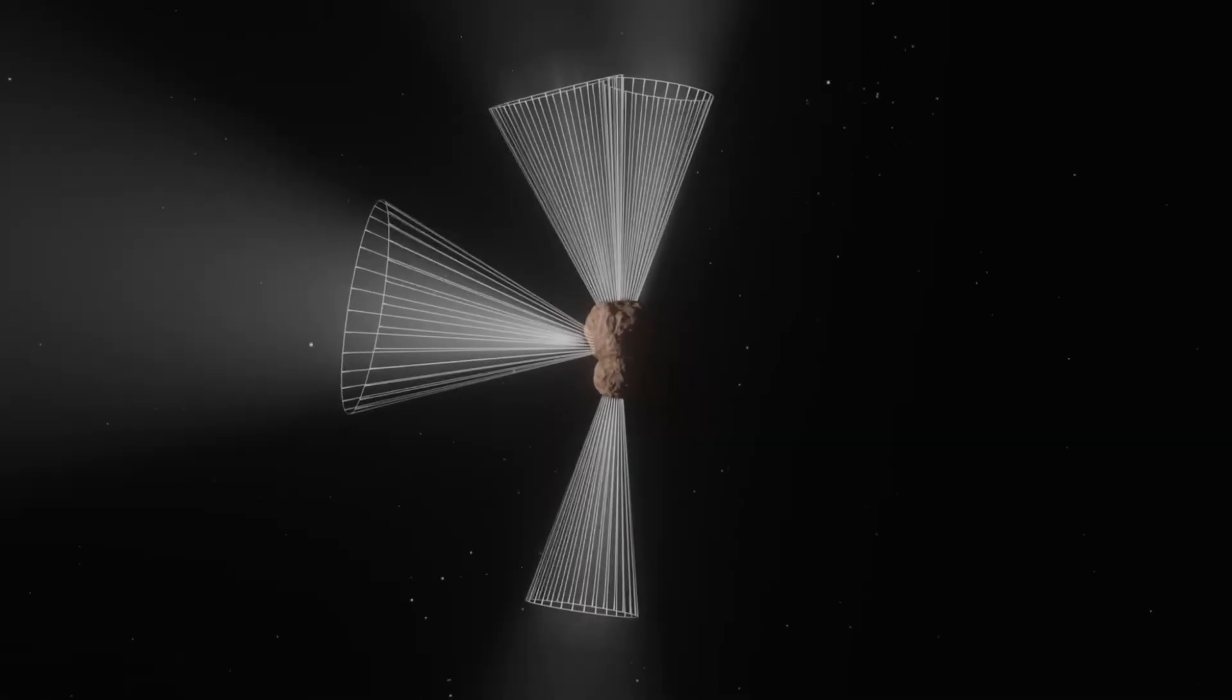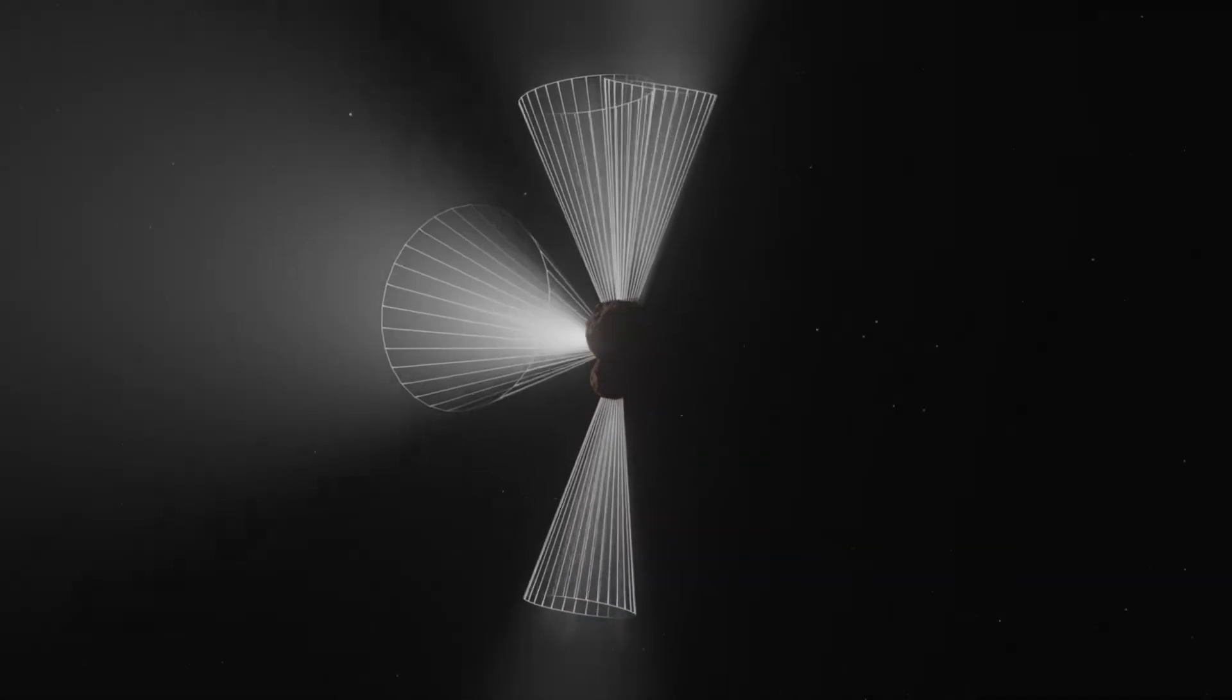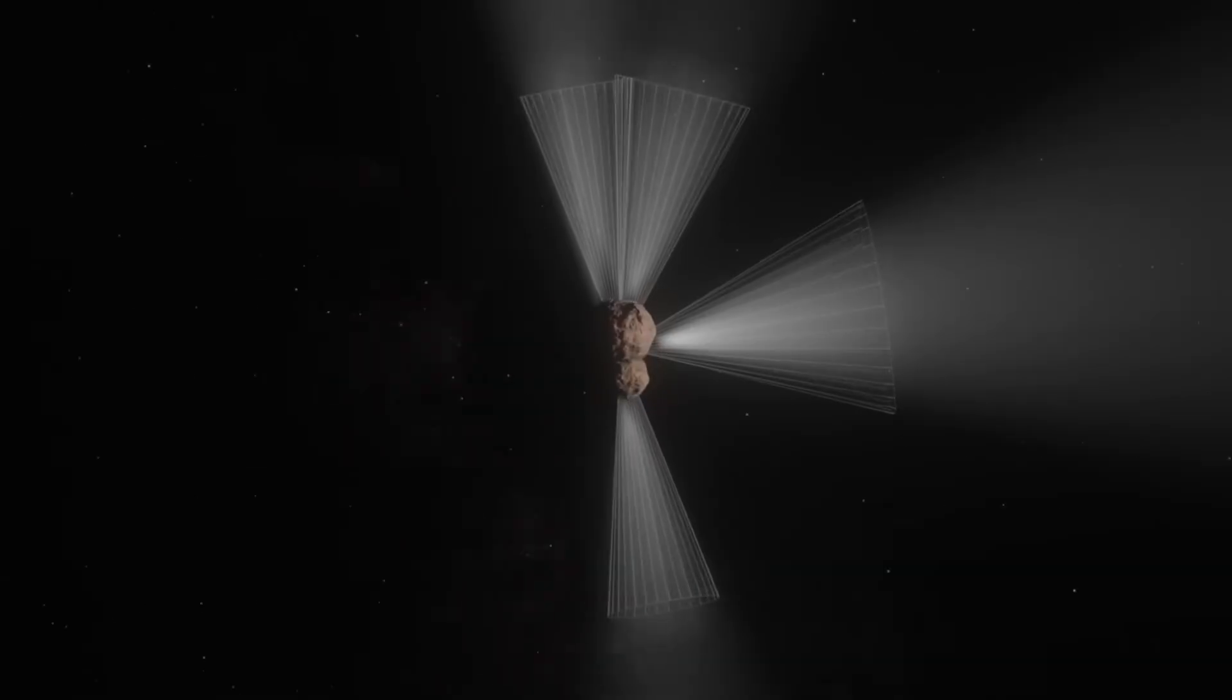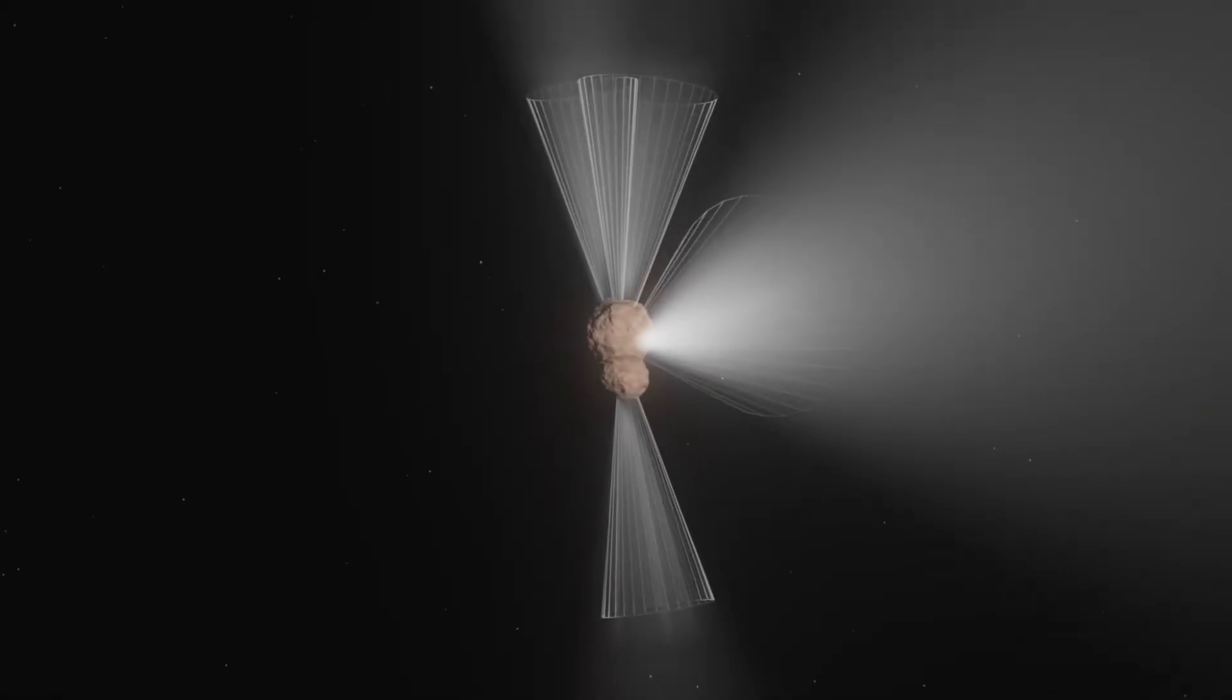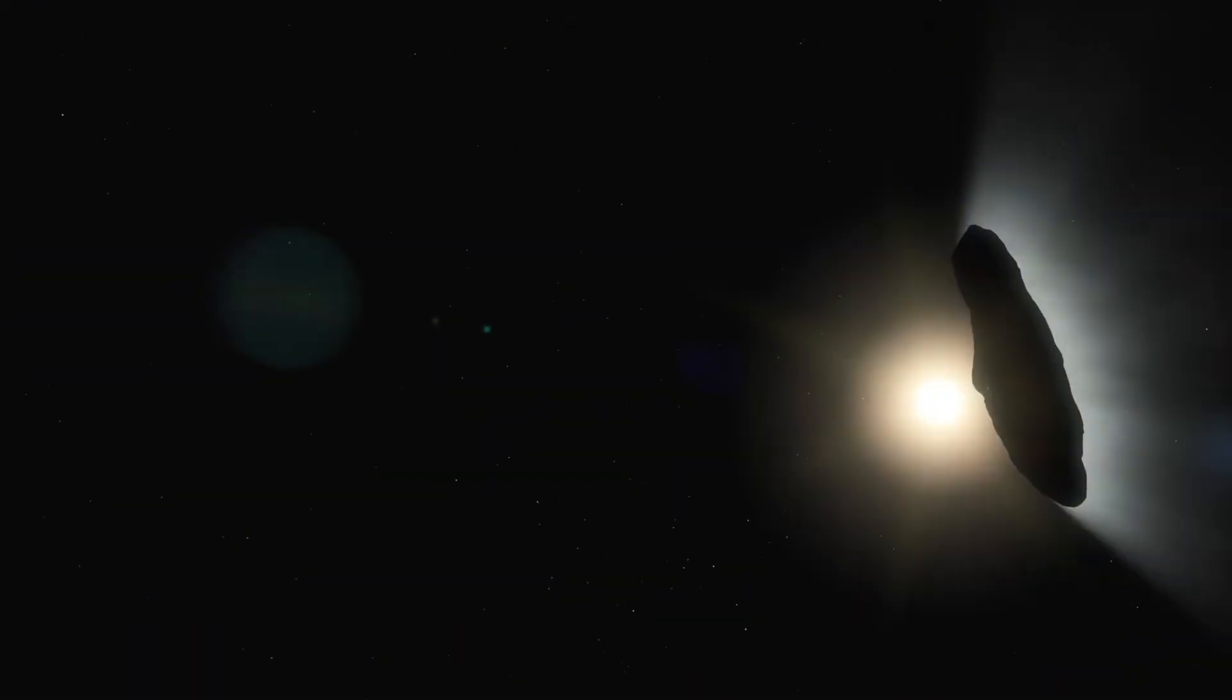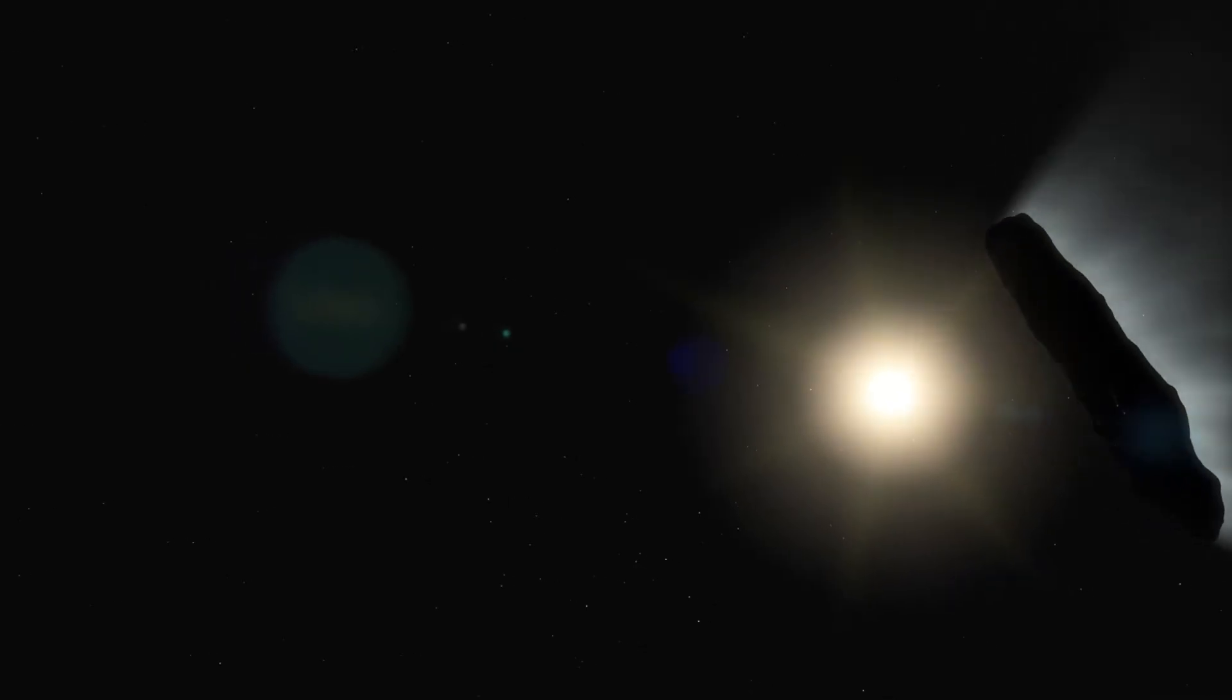That means the ion tail isn't just getting longer, it's becoming more developed and more organized. The solar wind is sculpting it into something complex, and that suggests we're watching this comet become more active in real time.